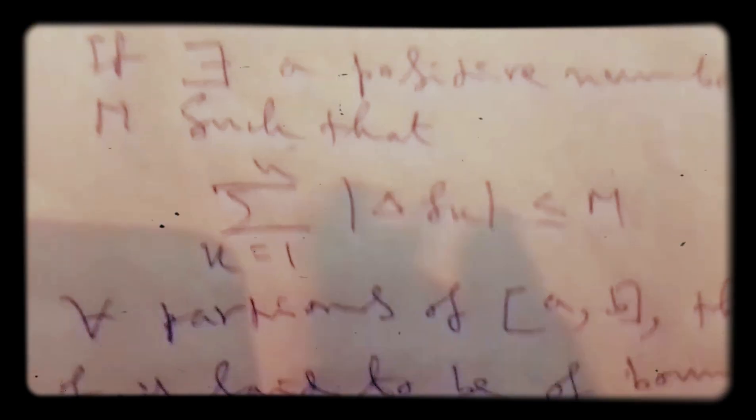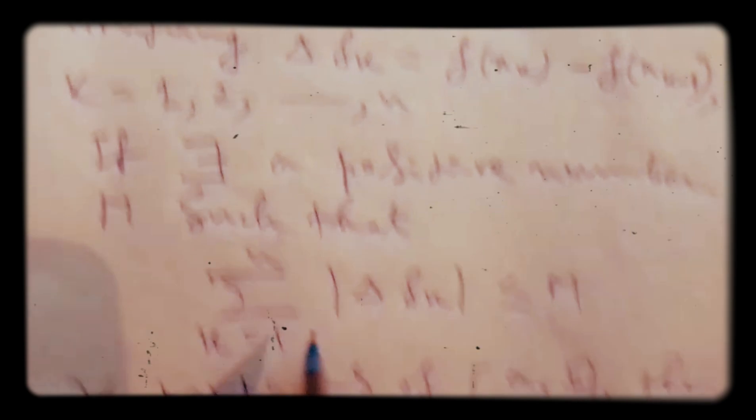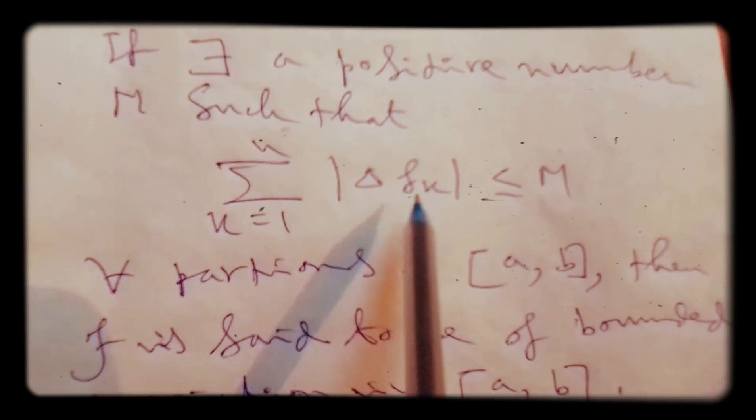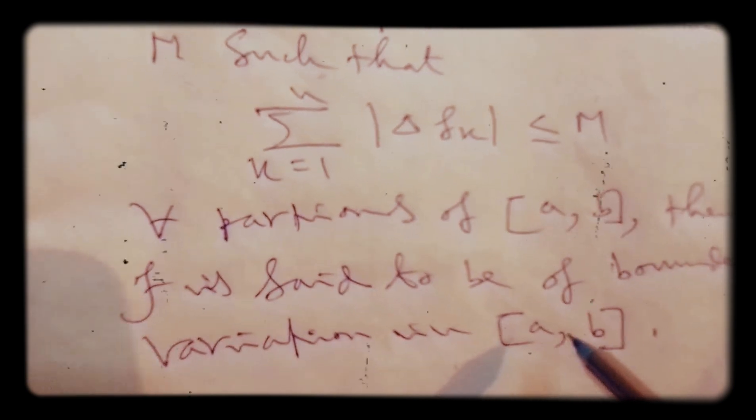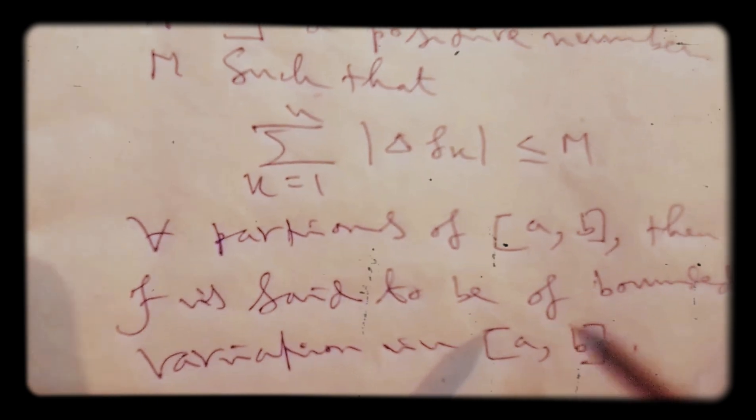So in this way we construct our definition of bounded variations. A function is defined on the interval [a, b]; pictorially we represent the partitions, and delta f_k represents the change in functional value — this is called the variation. We bound these variations by a constant M, giving the definition of bounded variation.